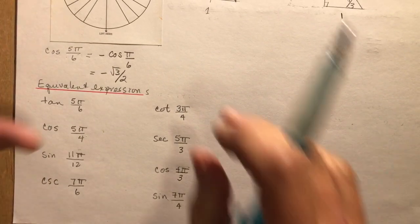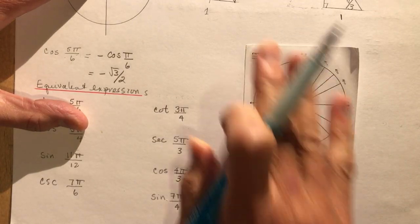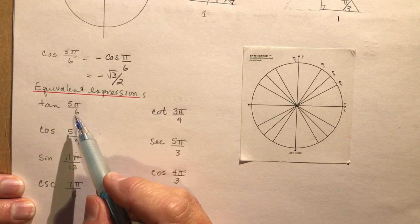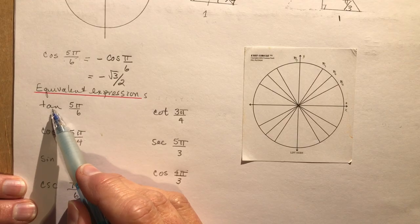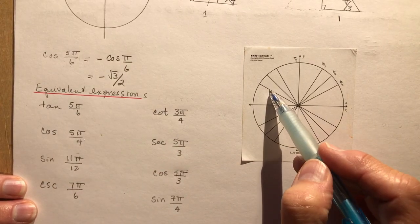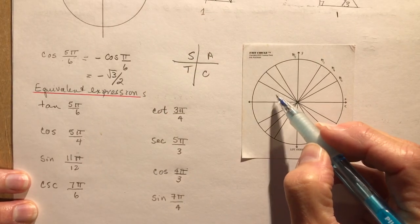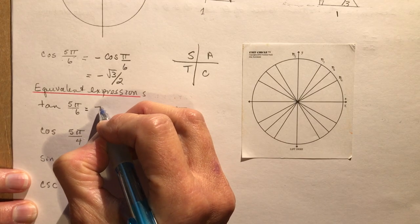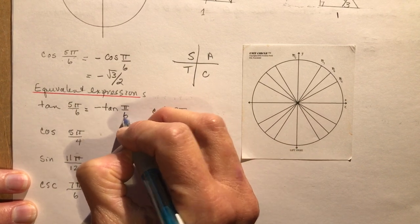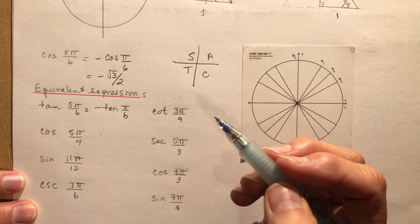Now let's look at equivalent expressions using the unit circle for reference. Anytime you're asked for an equivalent expression, find the related acute angle and determine the sign of that trig ratio in that quadrant. For tan(5π/6): it's in the second quadrant where tangent is negative, so the equivalent expression is negative tan(π/6).